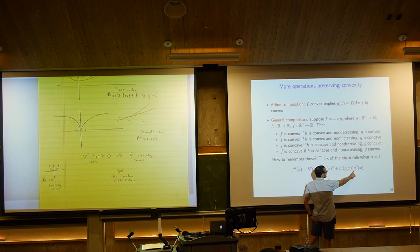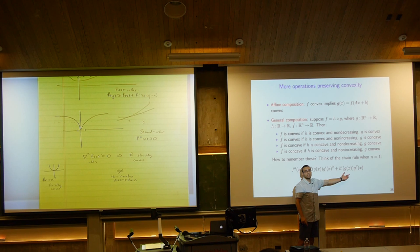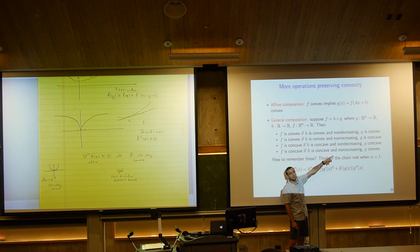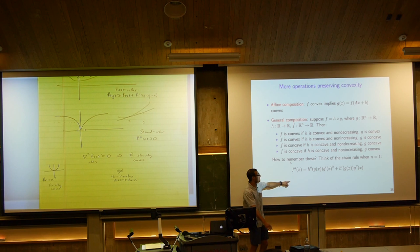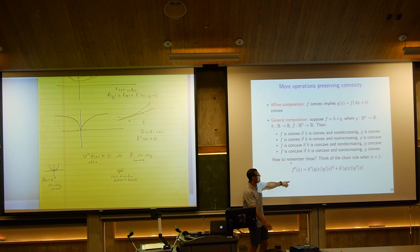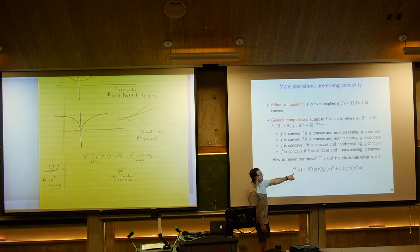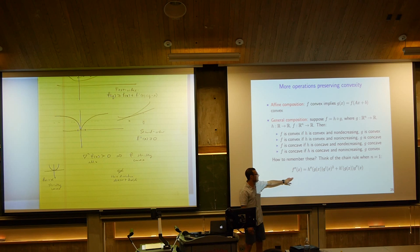Even though these rules may seem arbitrary, you can always re-derive them by taking two derivatives of your composed function and using the chain rule. They don't actually assume functions are smooth — they apply in general. It's just that this chain rule logic is how you remember them. Affine composition always works; general composition works with appropriate convexity and monotonicity conditions.